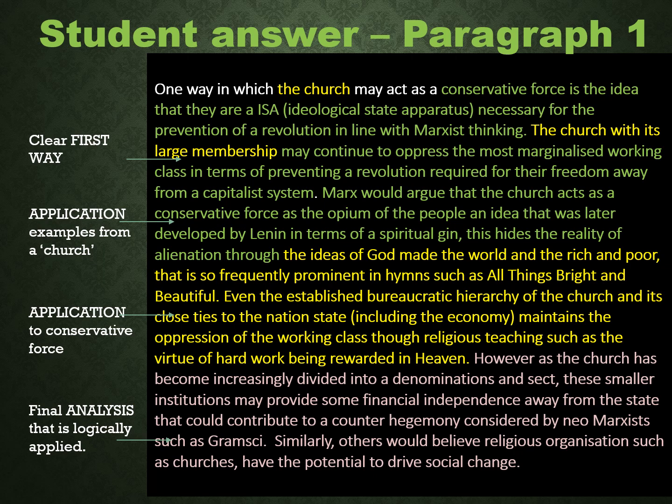The church and its characteristics are highlighted in yellow, along with examples from within a church that back it up. How it is a conservative force is mostly in green — that is more about what it is conserving, in this case capitalism, from a Marxist theory perspective. The analysis is in lilac at the bottom. The student starts off using the wording from the question: one way in which the church acts as a conservative force is it is an ISA — an ideological state apparatus. Something you might want to refer to is Althusser, who talks about a brainwashing function, necessary for the revolution in line with Marxist thinking.